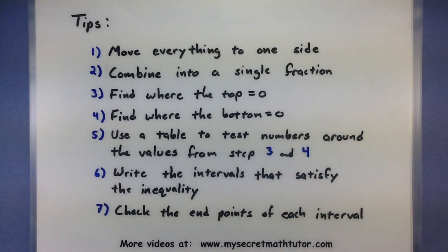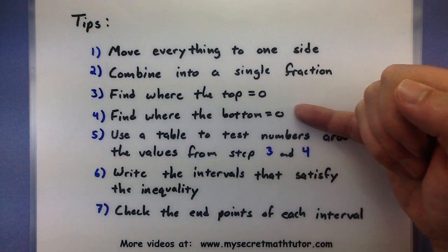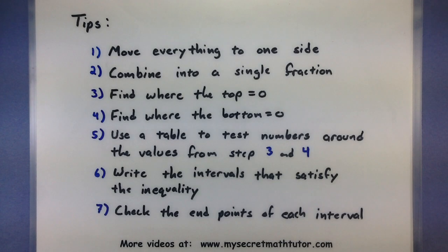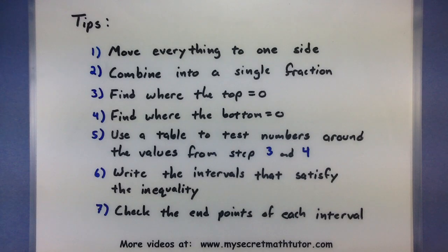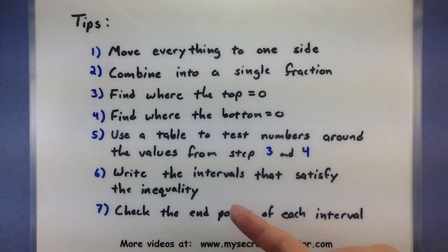Steps 3 and 4 are all about finding those critical values. You want to know where the top is equal to zero and where the bottom is equal to zero. Once we have those critical values, we'll use a table to start testing numbers around those values, looking for whether the expression is going to be positive or negative. Once we have all of the information about the signs, we'll write the intervals that satisfy the inequality.